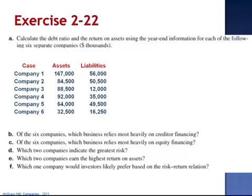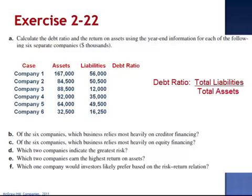Company 1 has $167,000 in assets and $56,000 in liabilities. The debt ratio indicates the portion of assets that are owned by non-owners, the creditors. To calculate the debt ratio, we take the liabilities and divide by the total assets. When we divide $56,000 by $167,000, the debt ratio is 0.34. $0.34 of every dollar of assets is owned by the bank.